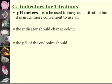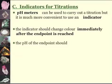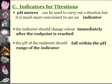pH meters can be used to carry out a titration, because it's much more convenient to use the indicator. Indicators change color immediately, but the pH endpoint should fall between the pH range.